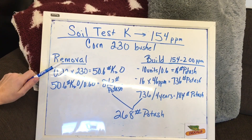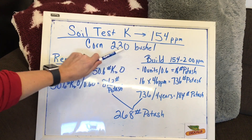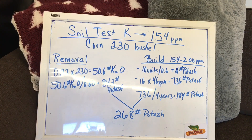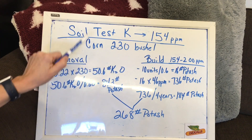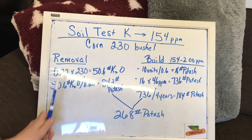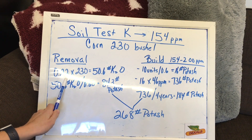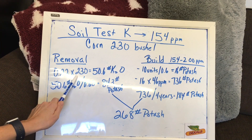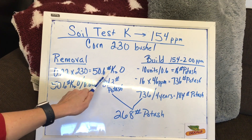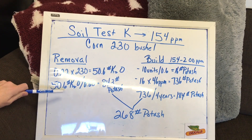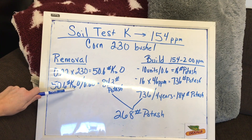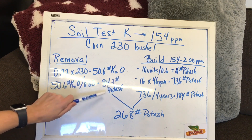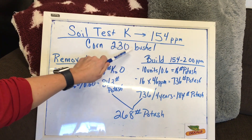So how much do we need? Let's look at this example. Let's say we have a soil test K of 154 parts per million and we're looking at a yield of 230 bushels. I like to see my soil test K at 200 parts per million. For removal on corn, that's 0.22 units of K2O per bushel. So 0.22 by 230 bushels gives us 50.6 pounds of K2O. We convert that into pounds of fertilizer: 50.6 divided by 0.60, because potash fertilizer is 60% K2O, gives us 84.3 pounds of potash — that's what we remove with our 230-bushel corn crop.